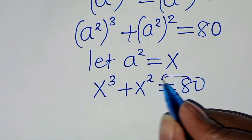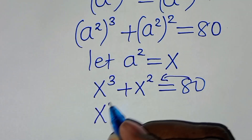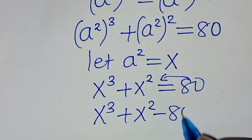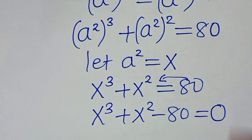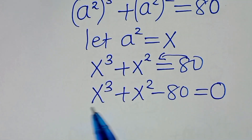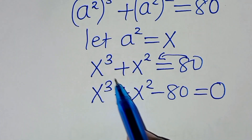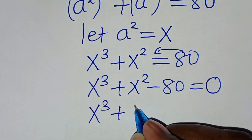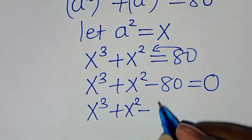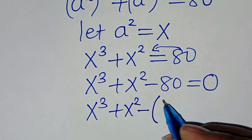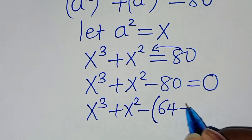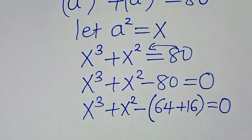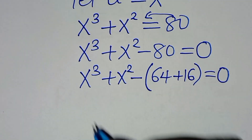Taking 80 to the left-hand side, we have x to the power of 3 plus x to the power of 2 minus 80 equals 0. This is a cubic function, or a polynomial of degree 3. We can express 80 as 64 plus 16, so we have x cubed plus x squared minus 64 minus 16 equals 0.